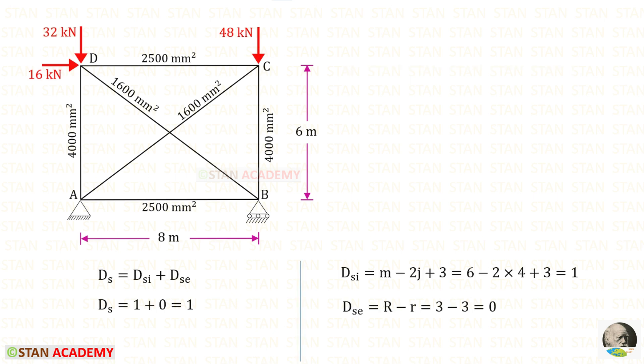First we have to find the degree of static indeterminacy. DSI is the degree of internal static indeterminacy, and this is the formula to find that.